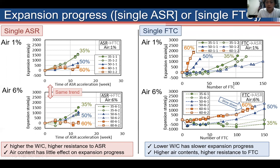For the single FTC case, lower water-to-cement ratio shows slower expansion progress. If specimens contain more air, the expansion speed is reduced, so higher air content provides higher resistance against FTC. These results are consistent with previous experiments.